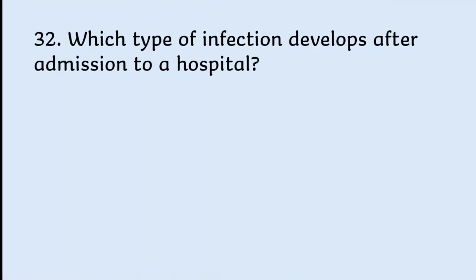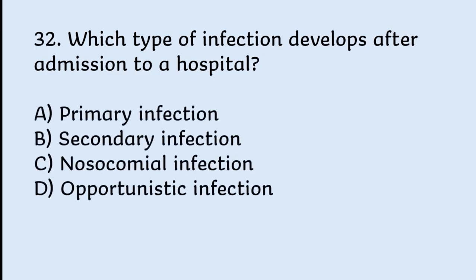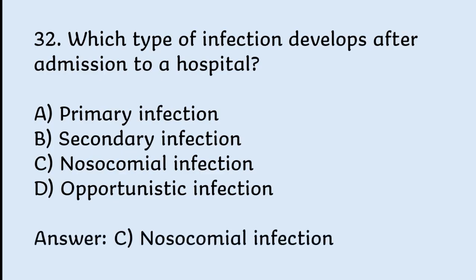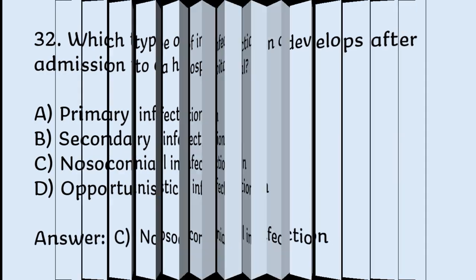Which type of infection develops after admission to a hospital? Options: primary infection, secondary infection, nosocomial infection, opportunistic infection. Correct answer is nosocomial infection.